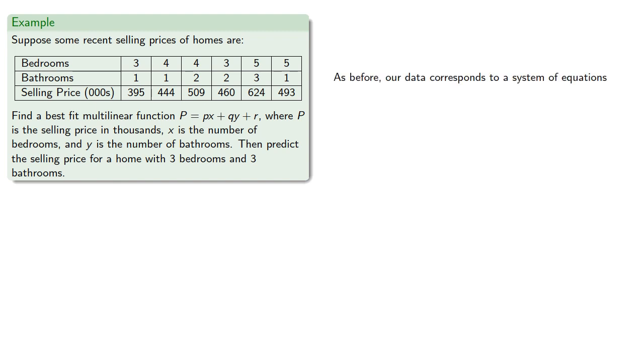As before, our data corresponds to a system of equations. We'd like to predict the selling price based on the number of bedrooms and bathrooms. So with three bedrooms and one bathroom, then 3p + 1q + r should be 395.